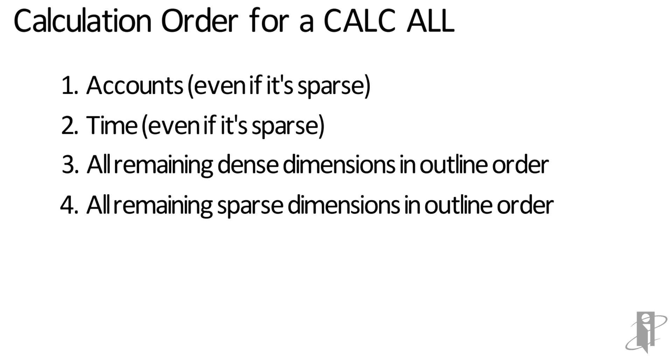However if accounts or time are sparse this could actually result in going through the entire database twice. So be very careful with the CALC ALL command if your accounts flagged dimension or your time flagged dimension is actually a sparse dimension. You're most likely going to want to use either the CALC DIM or the AG command to control the order it does the aggregations in that case.